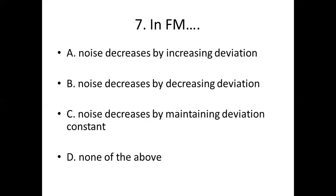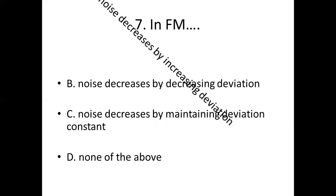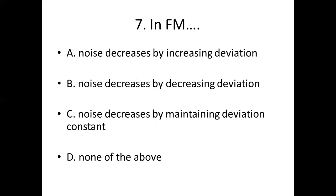Seventh bit. In FM: Option A, noise decreases by increasing deviation. Option B, noise decreases by decreasing deviation. Option C, noise decreases by maintaining deviation constant. Option D, none of the above. Answer: Option A, noise decreases by increasing deviation.